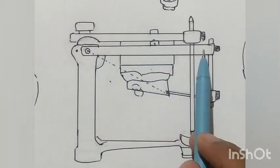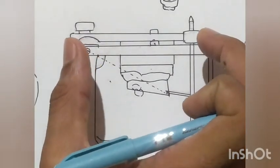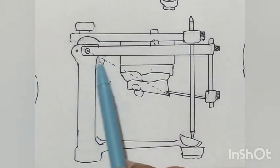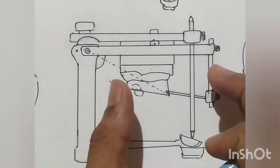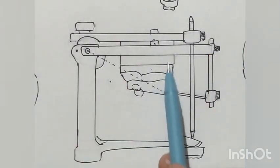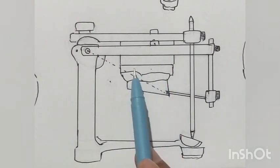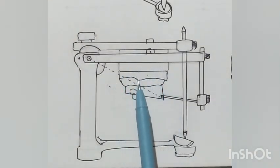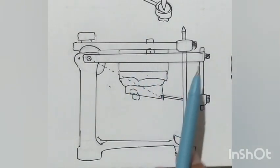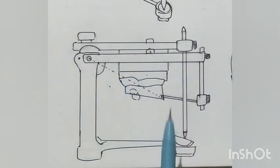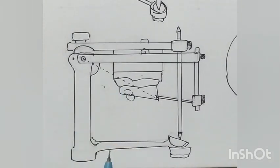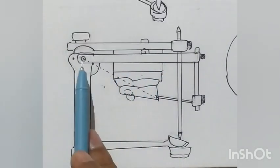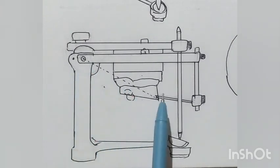We merge the Hanau articulator with the face bow. The face bow is fixed, recording the same relation as it was in the patient. So the face bow is now in exactly the same position as it was in the patient, meaning the position of the maxillary cast on the articulator is the same as in the patient. We have recorded and transferred the position of the maxillary cast to our articulator.